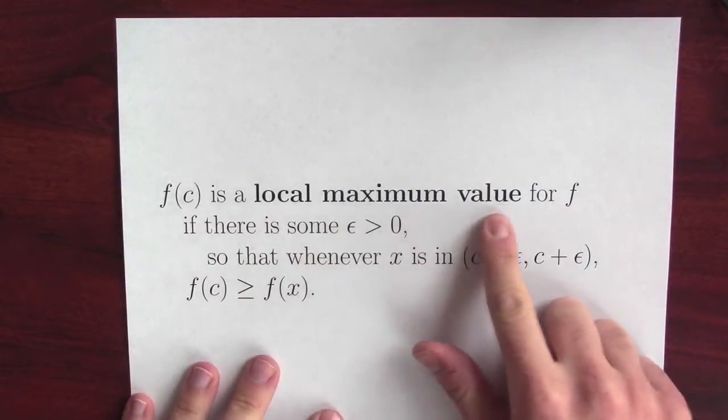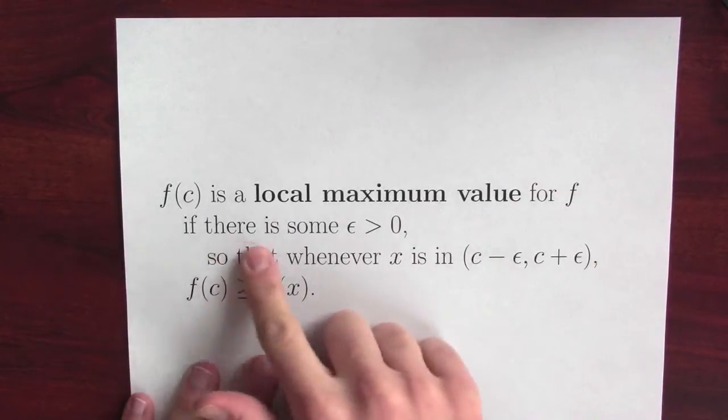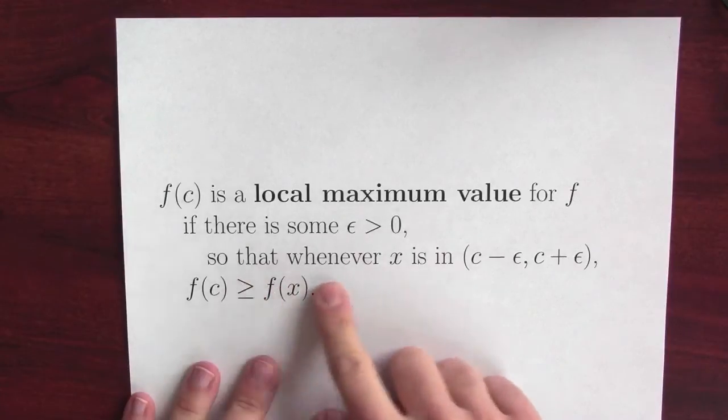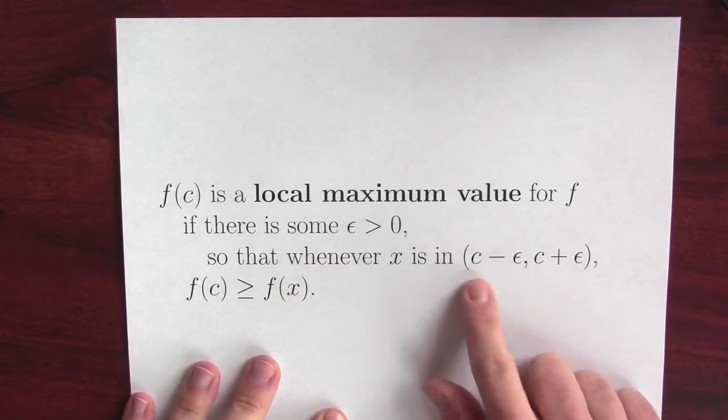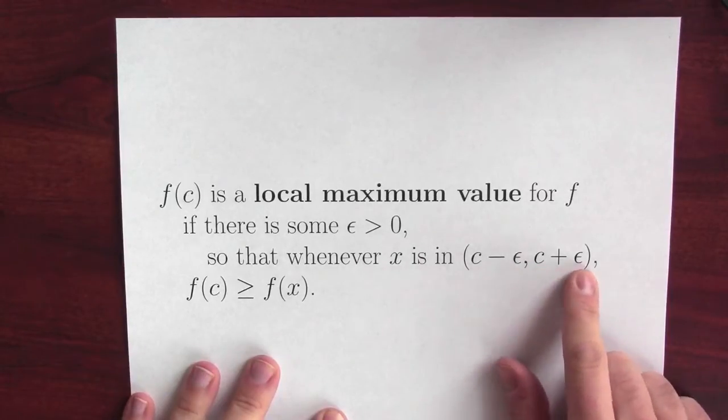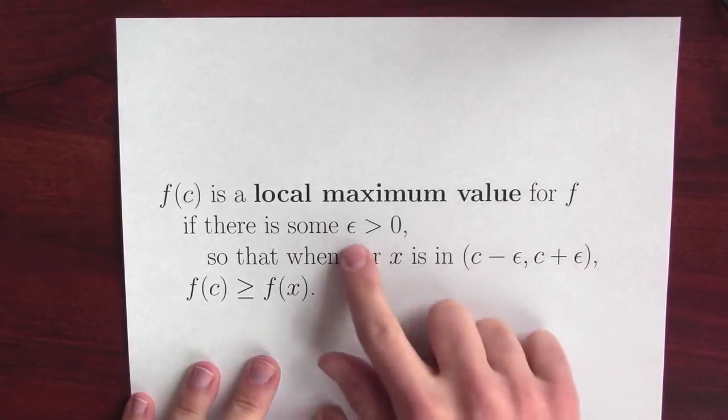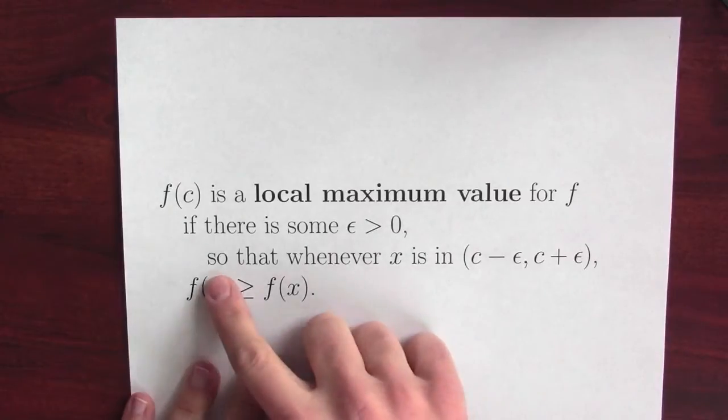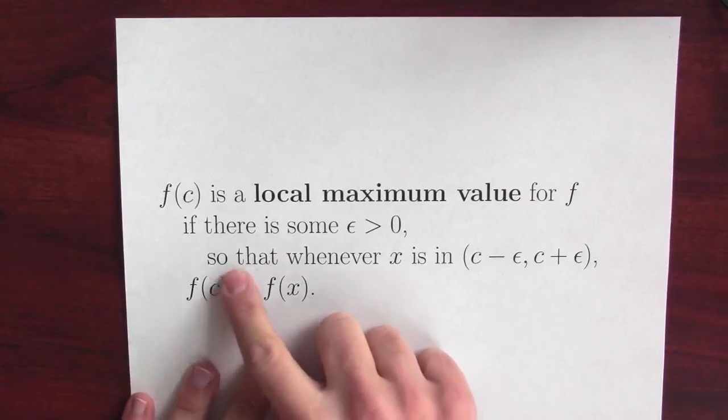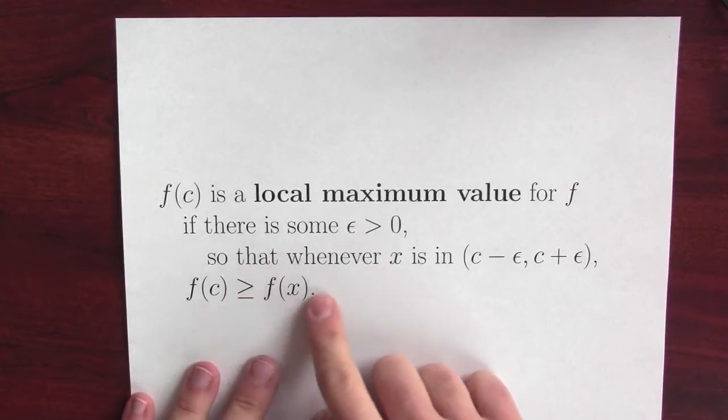f of c is a local maximum value for the function f if there's some small number. That's what I mean by near. So that whenever x is near c, and by near c now, I mean between c minus epsilon and c plus epsilon. This is really close to c if epsilon is real small. So that whenever x is contained in this interval, f of c is bigger than or equal to f of x.